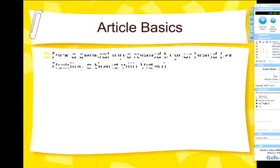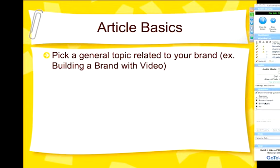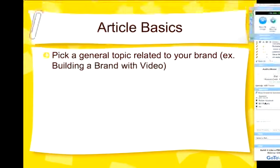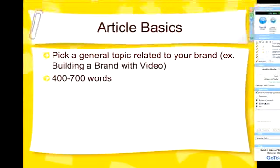Here are some basics. Pick a general topic related to your brand. For example, I might write something about building a brand with video content or building a brand with videos on YouTube. I'm generally going to write an article that's about 400 to 700 words. Here's a tip: if I'm going to write an article about video content posted on YouTube, I'm most likely going to post a video with it. So I might write 400 words, but I'm also going to post a video.